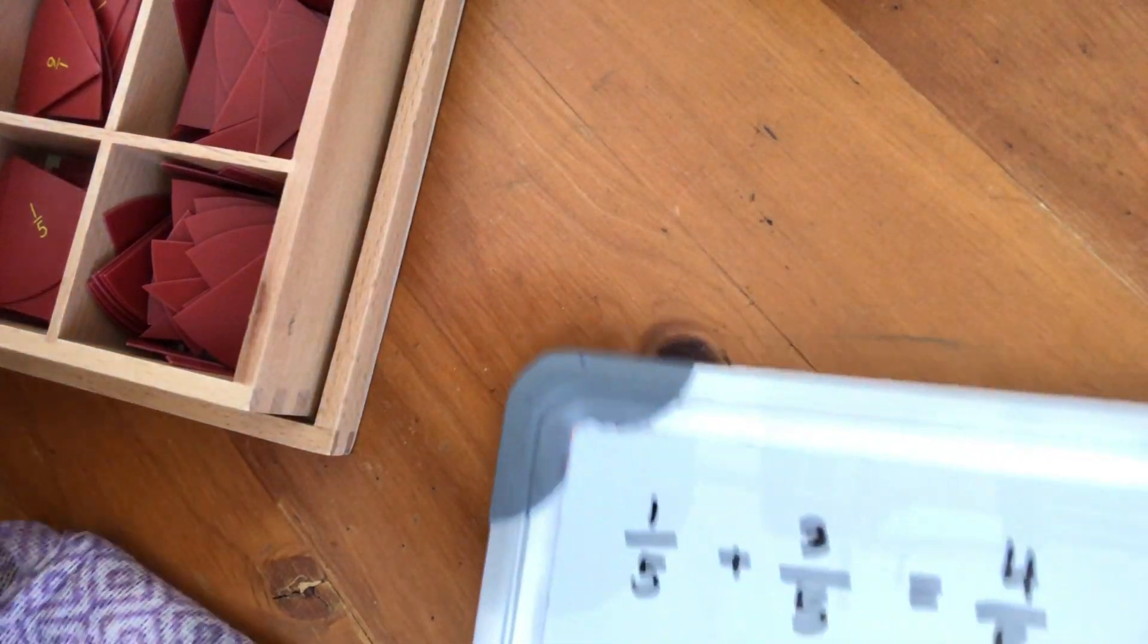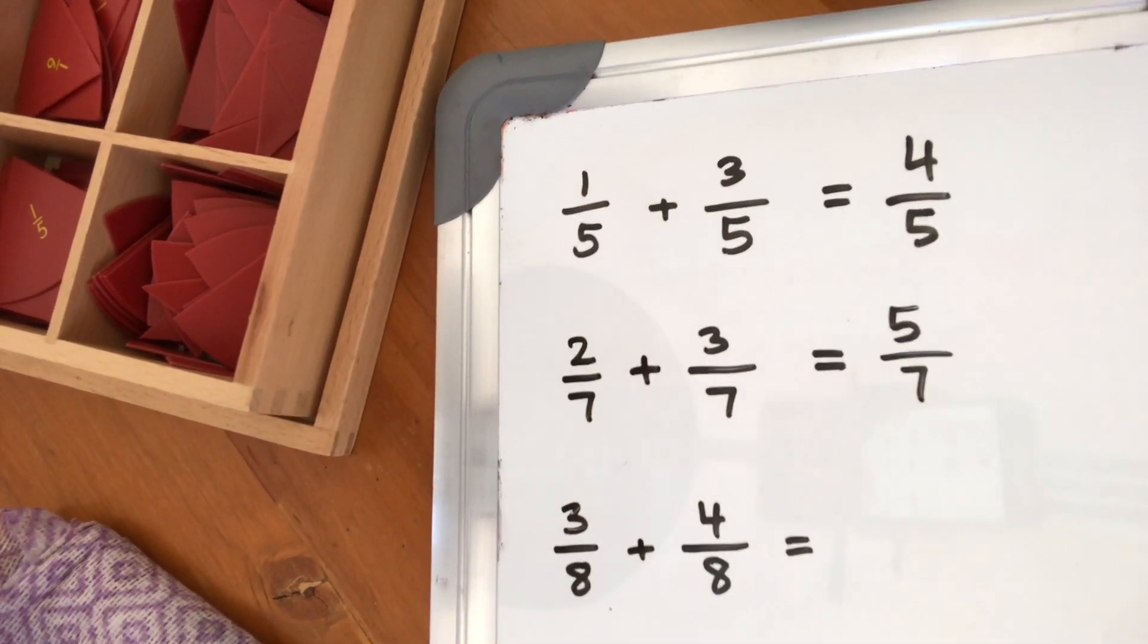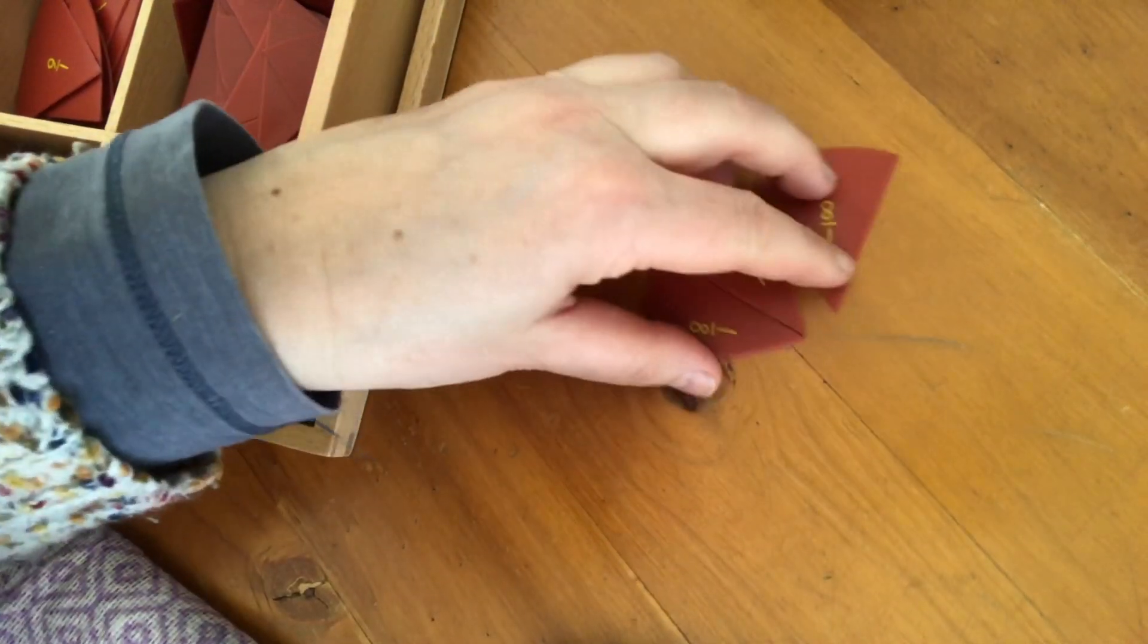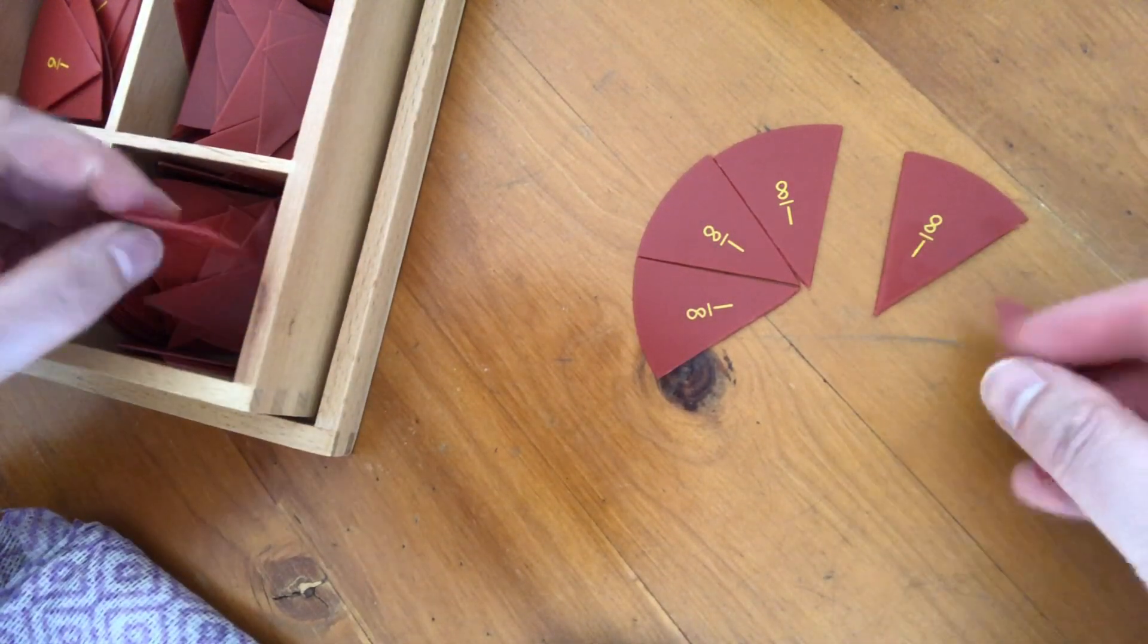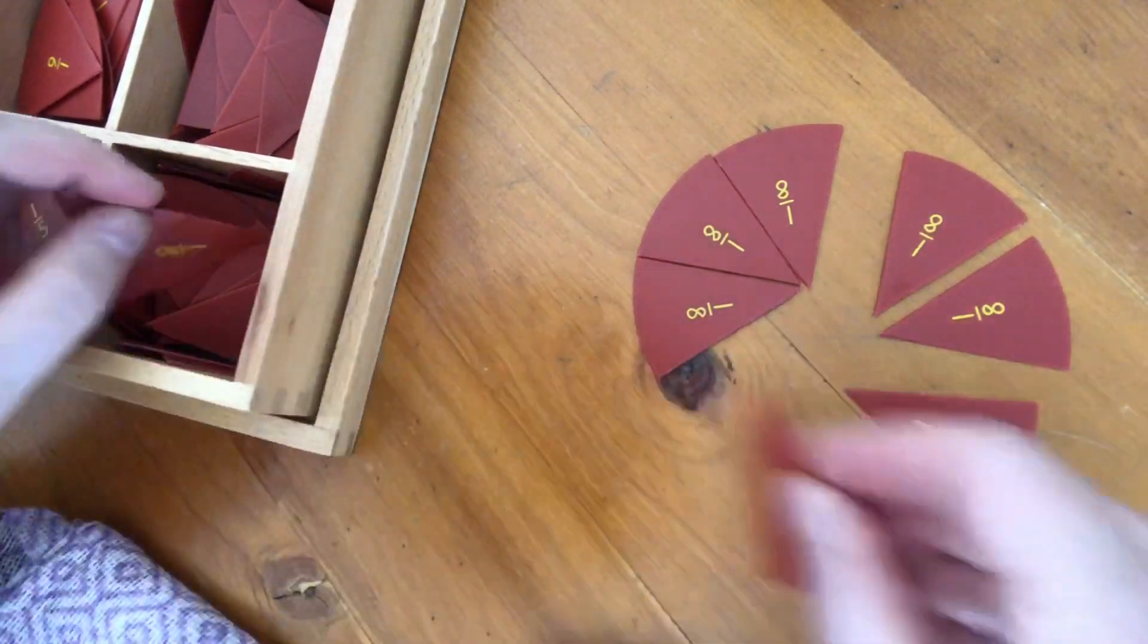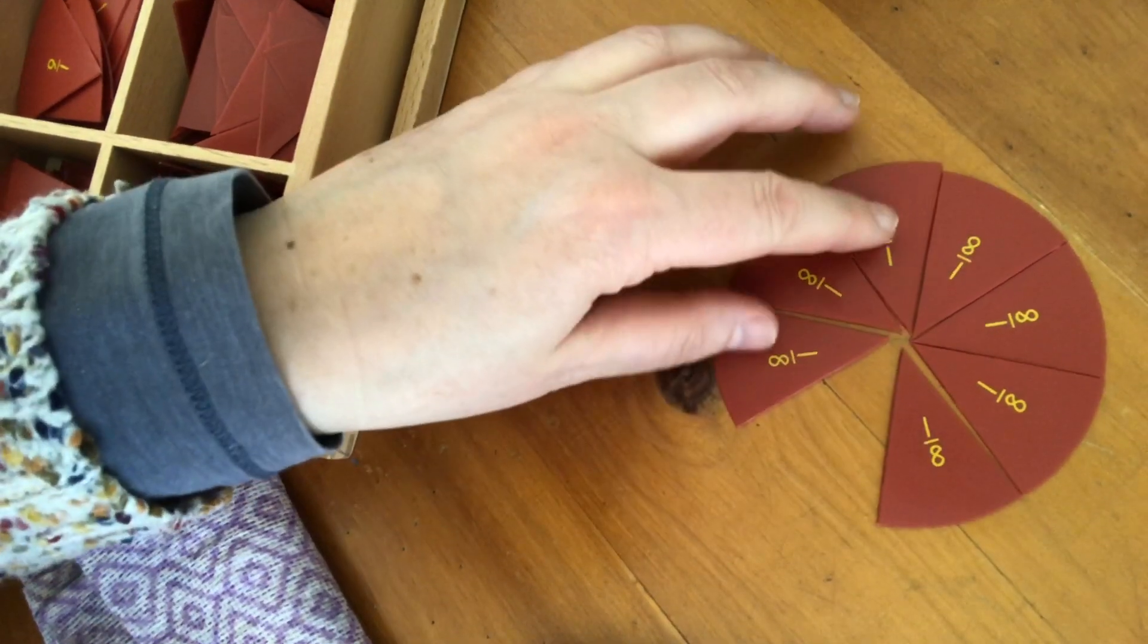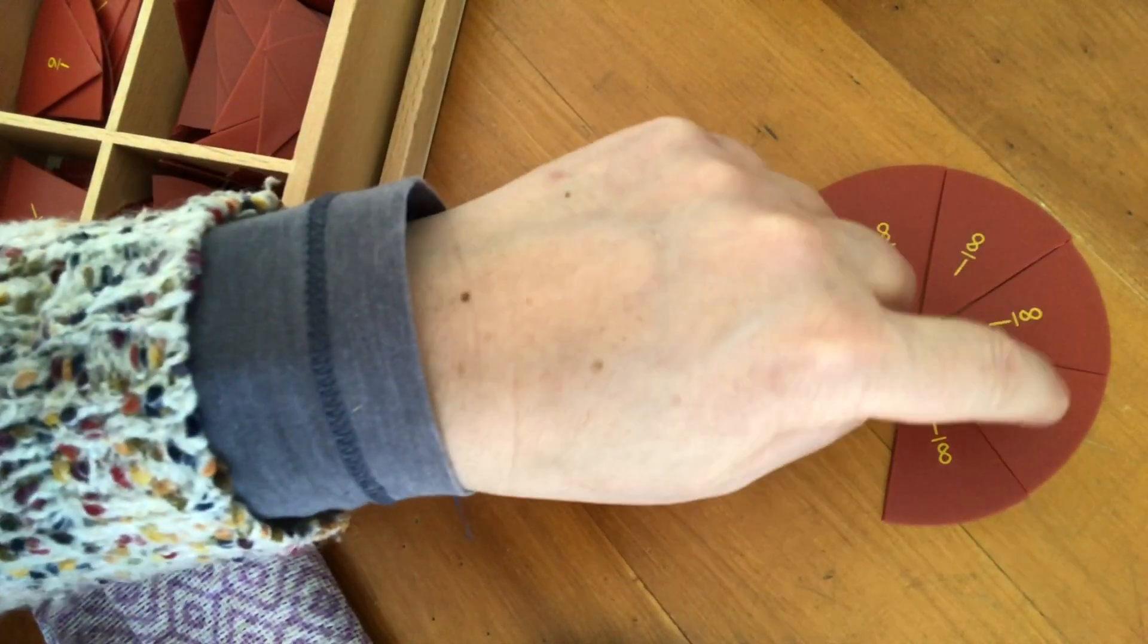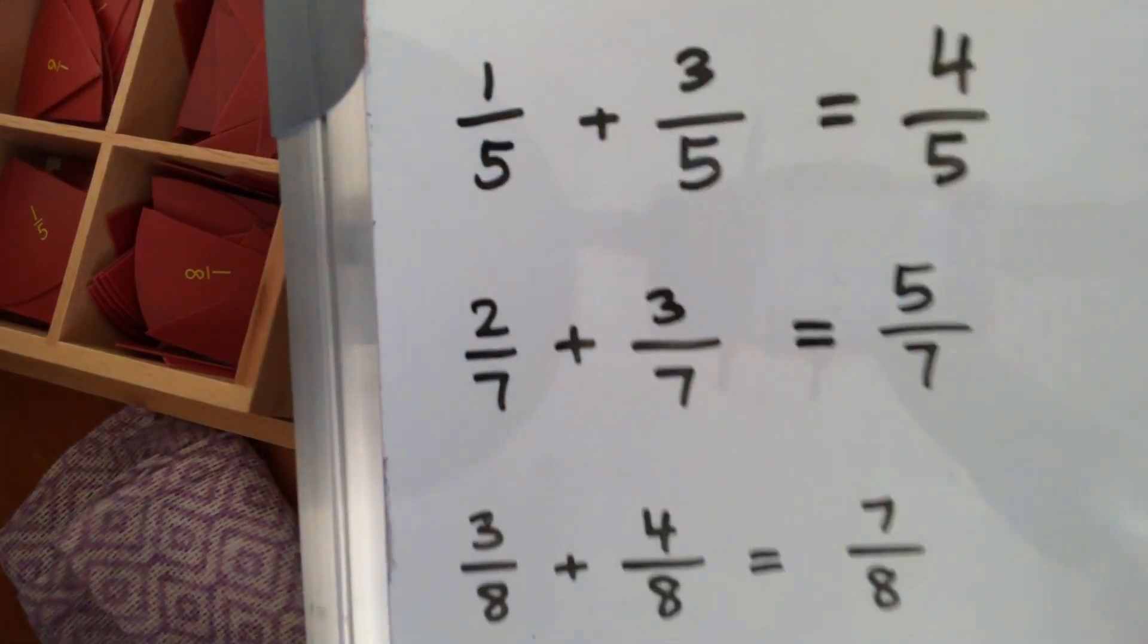Next I will do 3/8 plus 4/8. 3/8 and another 4. 1, 2, 3, 4. I now have 1, 2, 3, 4, 5, 6, 7/8. And that's recorded.